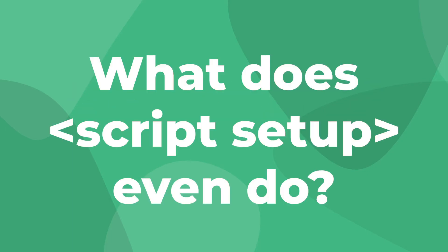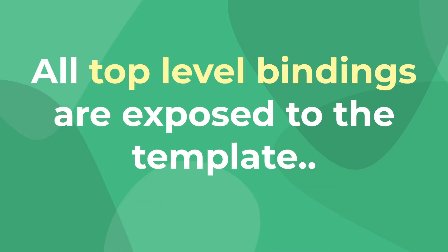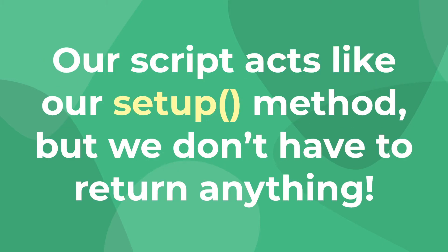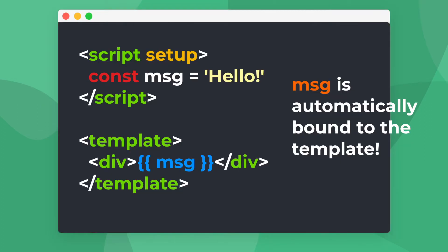So first, let's get a basic overview of how script setup works. In script setup, all of the top-level bindings are exposed to the template. In the Composition API, most of us are used to returning anything we want exposed to the template directly from our setup method. With this proposed syntax, the data, computed properties, and methods that we declare are all automatically exposed to the template.